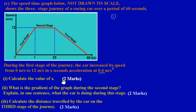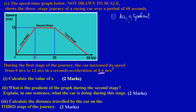Part one asks us to calculate the value of X. X is on the x-axis — the time value we need to find, representing how long the car took to accelerate at 0.6 meters per second squared. From earlier lessons, we know that acceleration is equal to the gradient of a line when working with a speed-time graph. So we're finding the gradient of the first stage diagonal line.